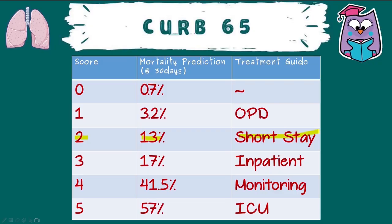Oral antibiotics can include penicillin, co-amoxiclav, a macrolide, or a combination of both depending on clinical judgment. Patients scoring three and above require IV antibiotics and immediate hospital admission. Patients scoring five require a consult from the critical care team. Pro tip: even when not asked for a score, use CURB-65 mentally for all pneumonia questions about antibiotic choice or severity.